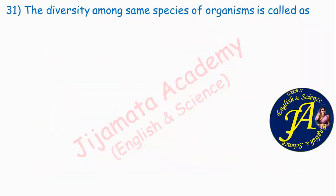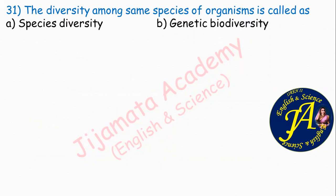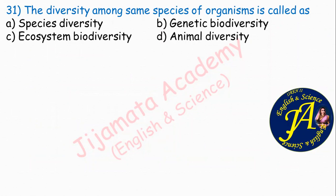The diversity among the same species of organism is called as — options are species diversity, genetic biodiversity, ecosystem biodiversity, animal diversity. Option B is correct: genetic biodiversity. Each human being is different — that is genetic biodiversity.